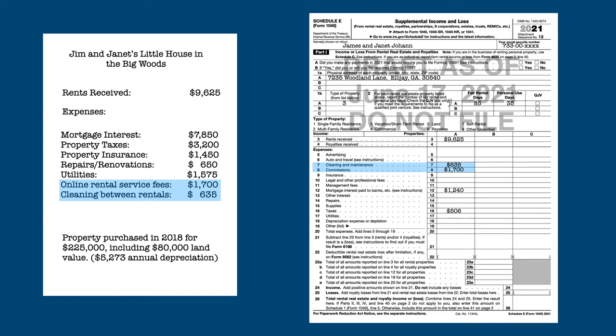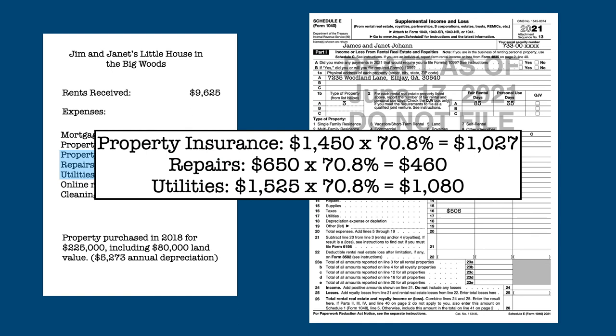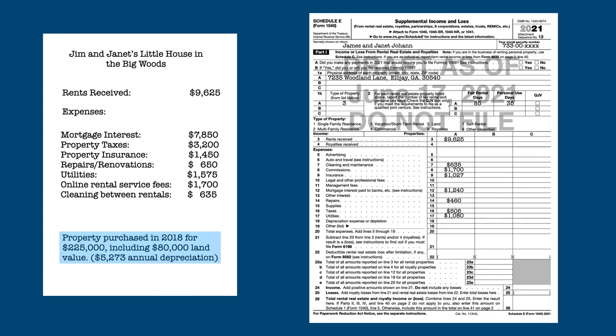Next, they listed direct expenses for the property on the Schedule E in full — the commissions they paid plus the cleaning expenses. After that, they apply the IRS method percentage to all the other cash expenses and enter those on the appropriate lines. Finally, they figure the depreciation on the property, apply the IRS method percentage to the amount, and enter that amount on line 18.